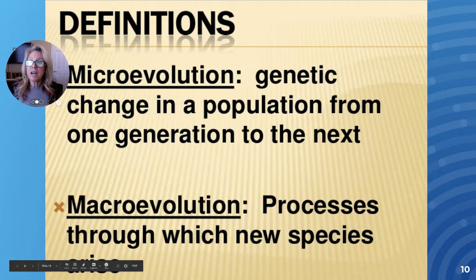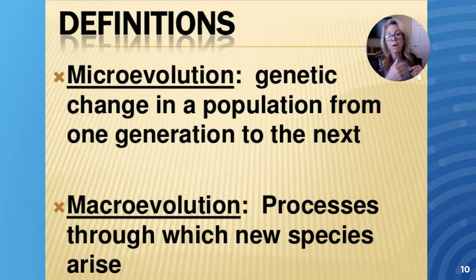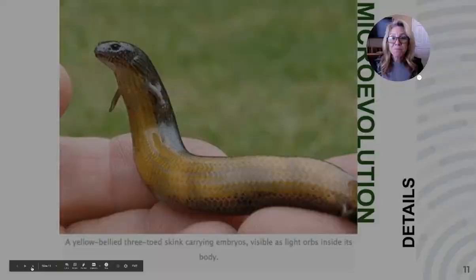We need to differentiate between microevolution and macroevolution. Microevolution is small allele frequency changes, but you're still the same species. When you talk about macroevolution, this is when you have new species arise. Microevolution is within a population, and macroevolution is large-scale, forming a new species — and we'll be talking about that in the next chapter, chapter 17.